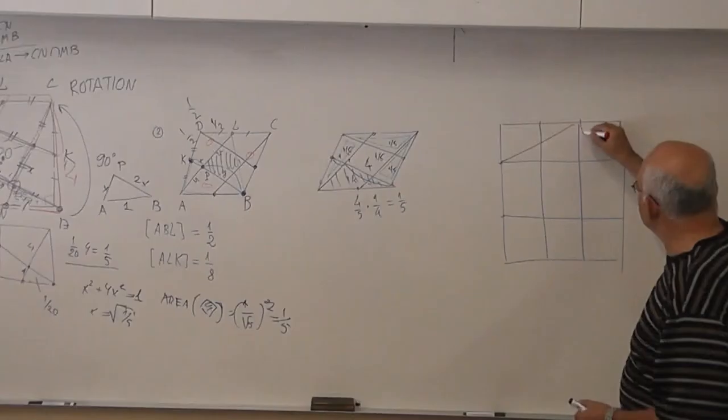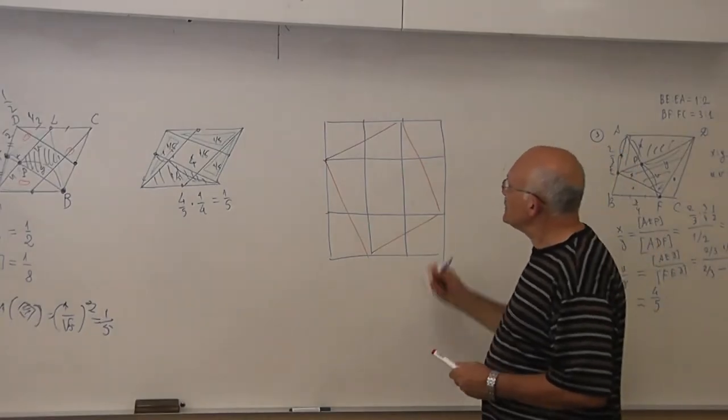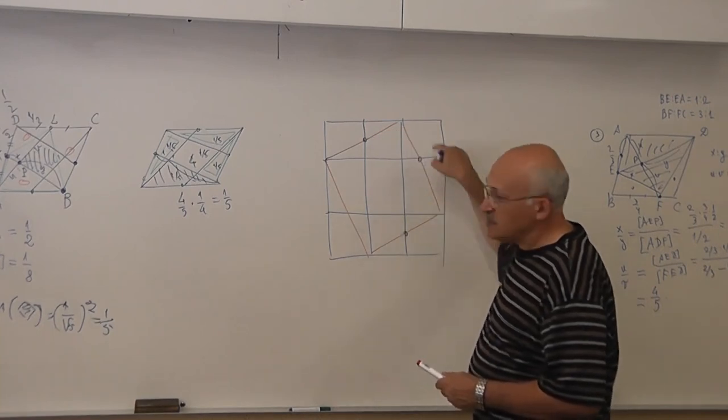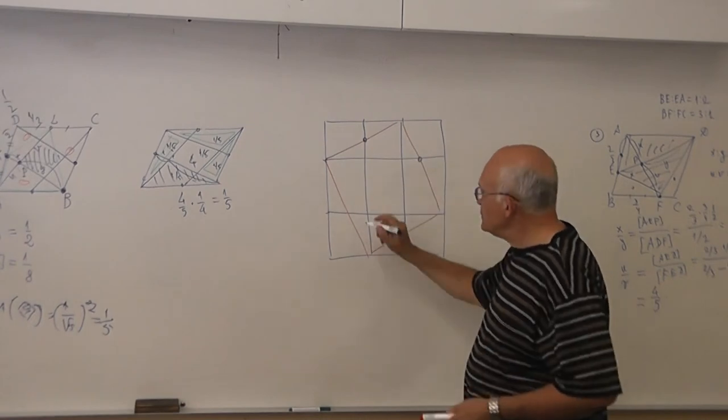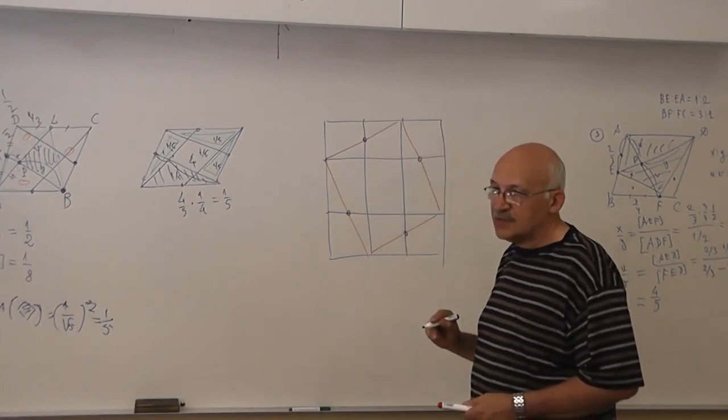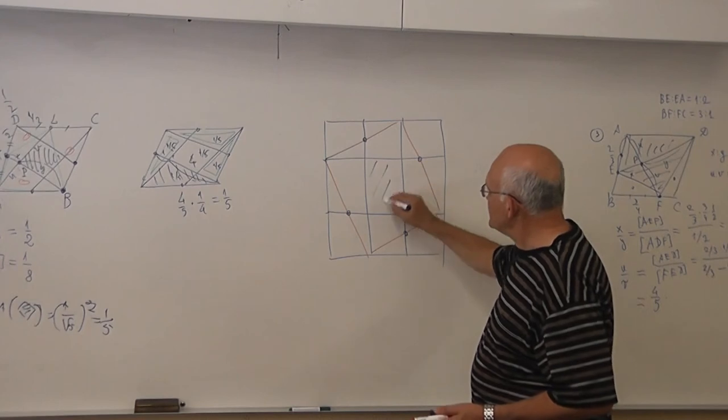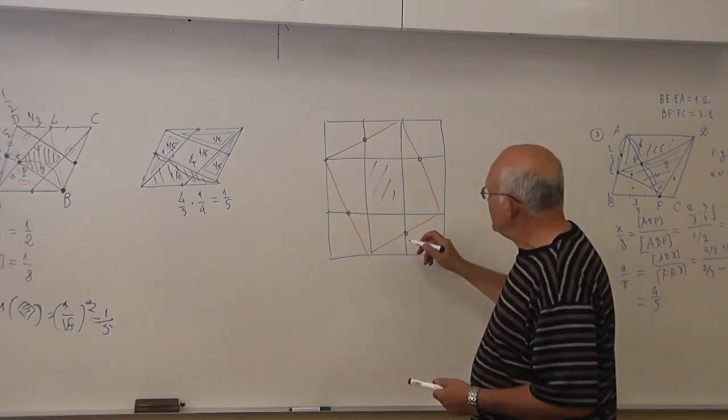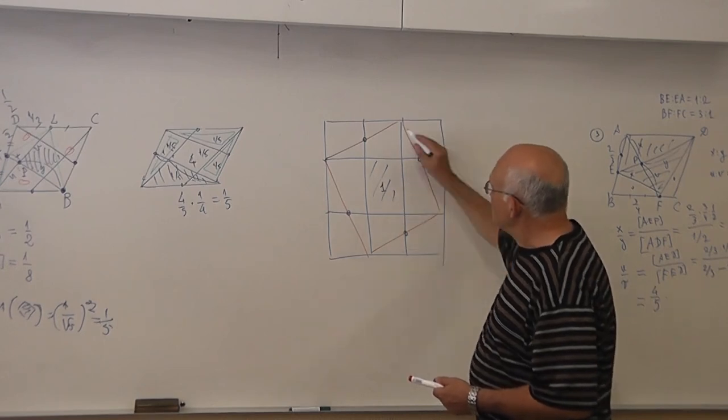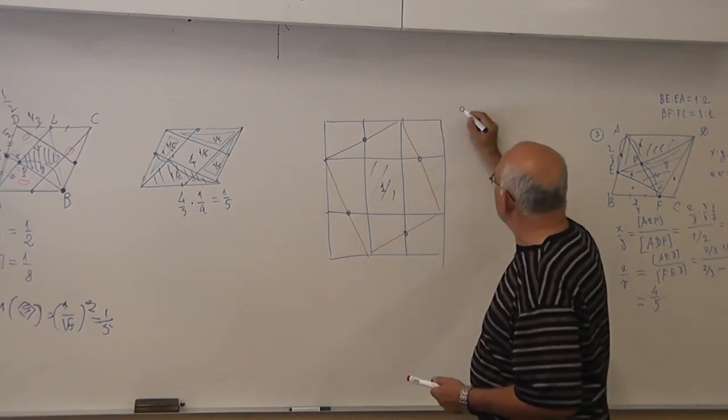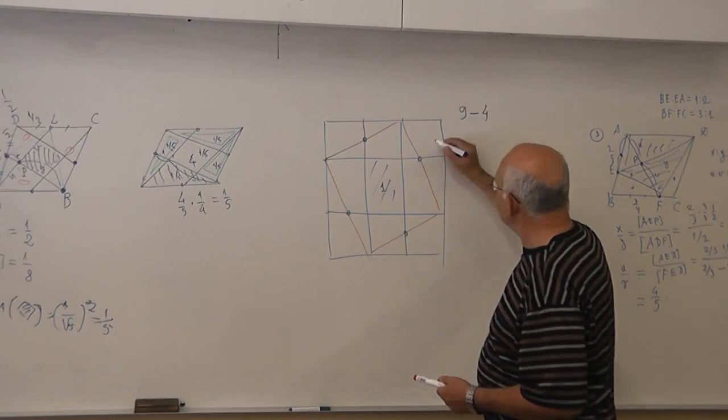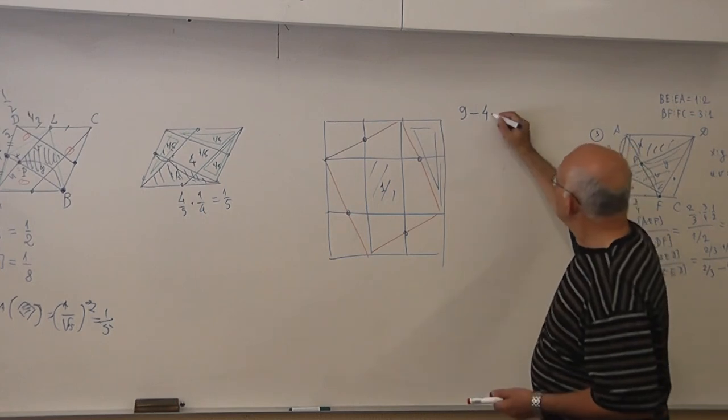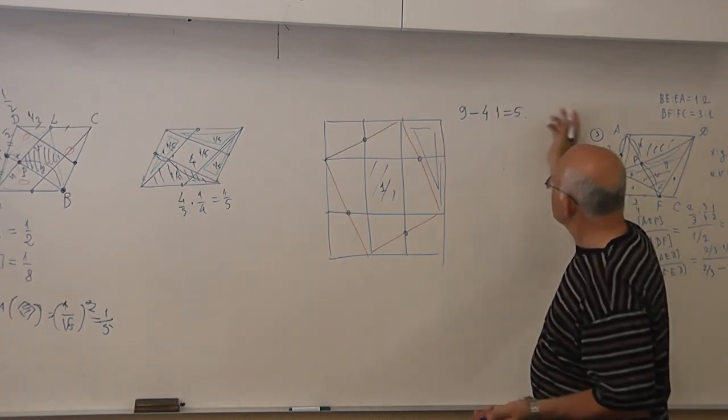For example, this square here, D would be the midpoint, this would be the square, this would be the midpoint, so this would be the one. And if this is one, then what would be this area? Nine minus four times, what would be the area? One. That's it.